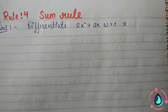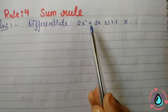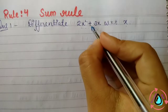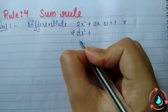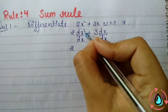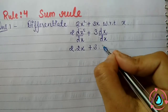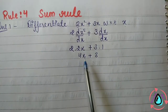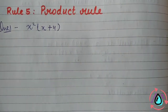Rule 4 is the Sum Rule. For example, differentiate 2x² + 3x with respect to x. When there is a plus sign, we differentiate each term separately keeping the plus sign as it is. 2 is constant so we write 2·d(x²)/dx + 3·d(x)/dx = 2·2x + 3·1 = 4x + 3. So the derivative of 2x² + 3x is 4x + 3. This is the simplest of all the rules.